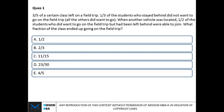Let's see how to make ratio complex questions very easy to solve — we'll do it under one minute. Try to understand the trick. The question: three-fifths of a certain class left on a field trip. One third of the students who stayed behind did not want to go. When another vehicle was located, half of the students who did want to go but had been left behind were able to join. What fraction of the class ended up going on the field trip?